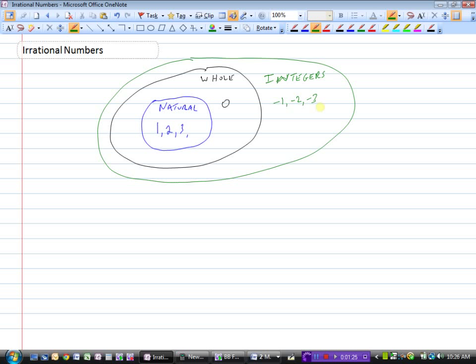So the opposite of the natural numbers - negative 1, negative 2, negative 3, and so on. Natural numbers are 1, 2, 3; whole numbers are 0, 1, 2, 3; and integers are all of these numbers plus the negatives.